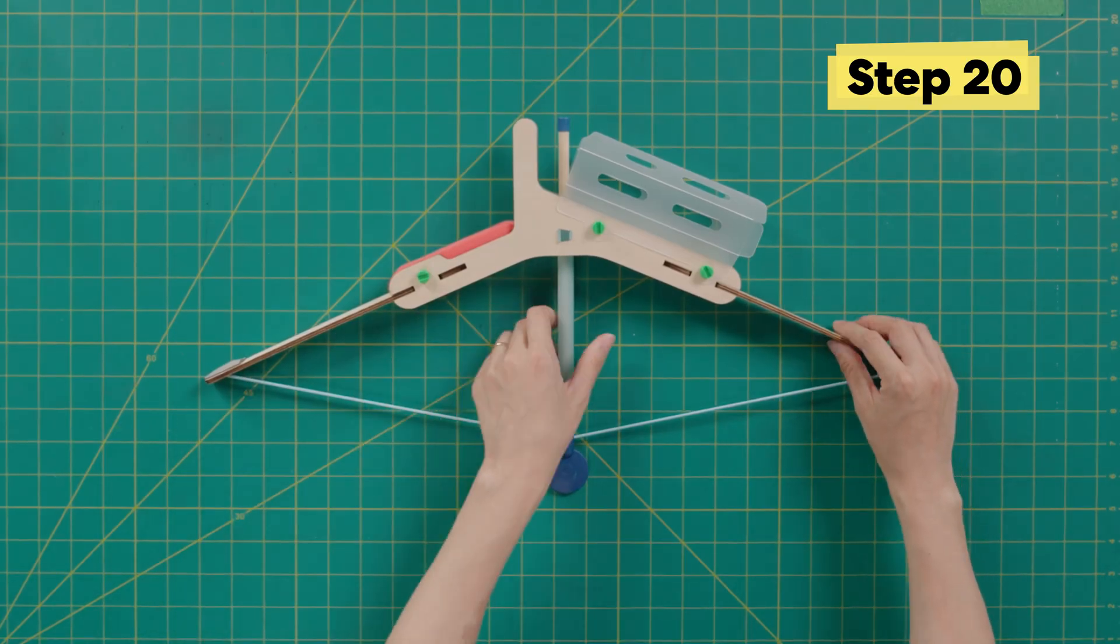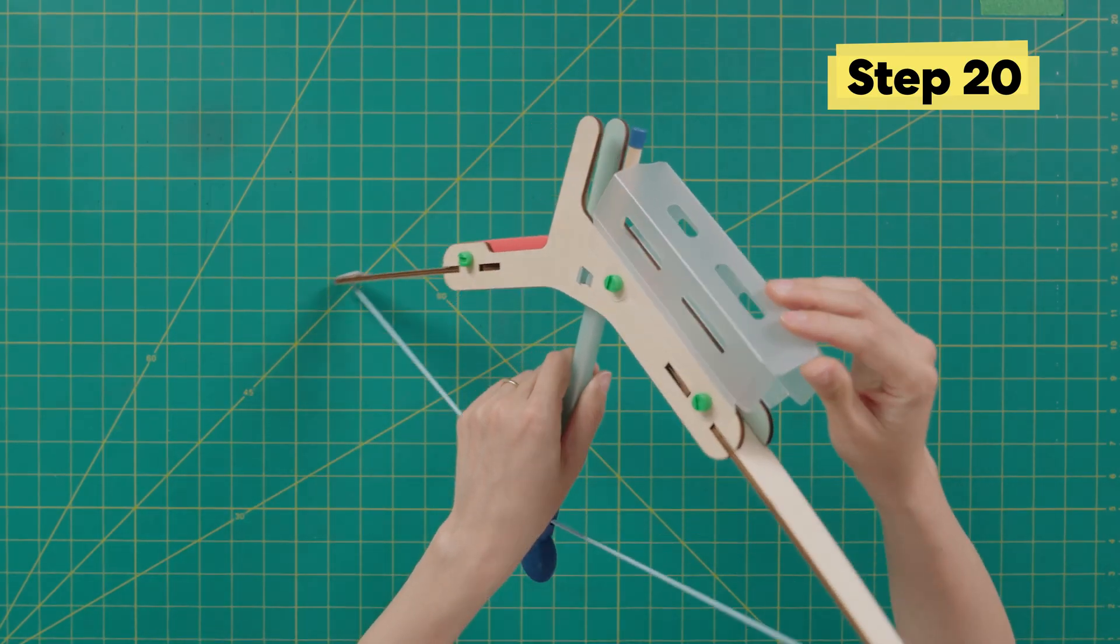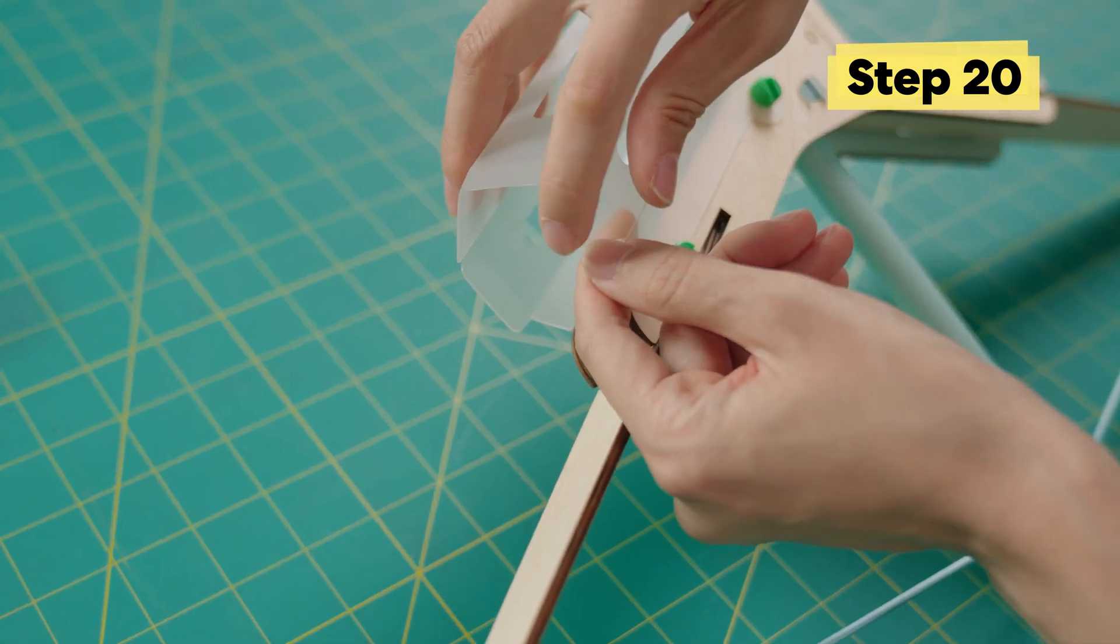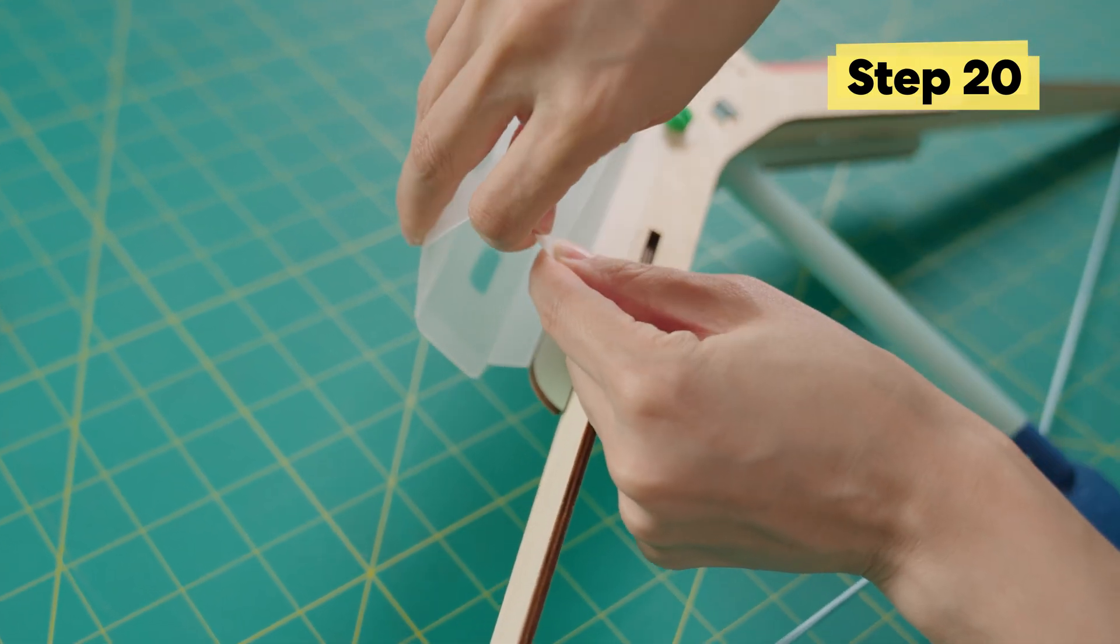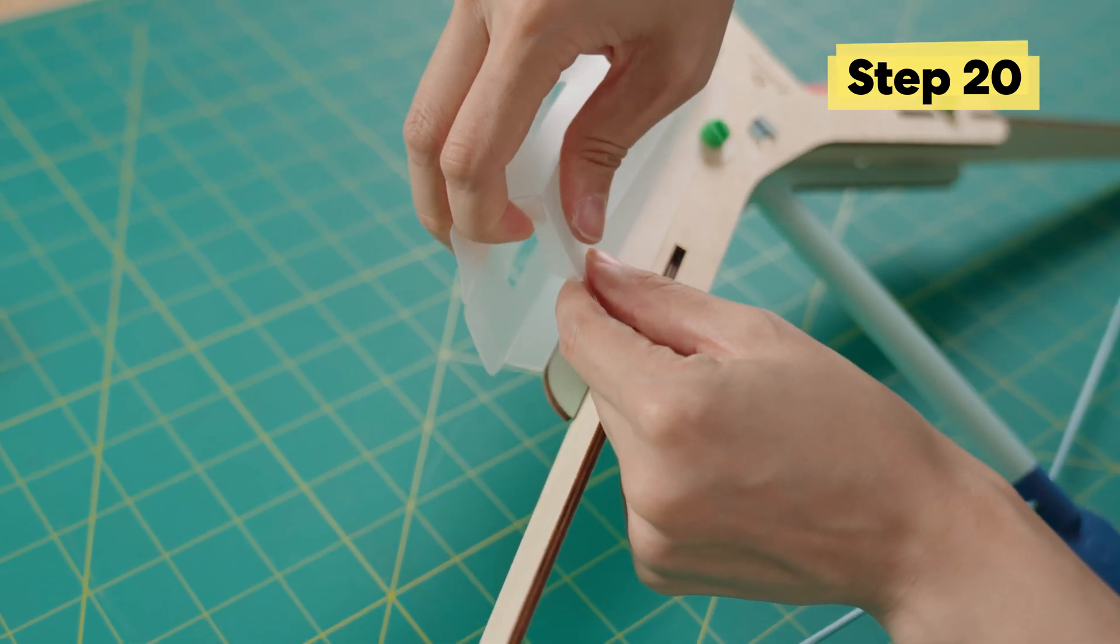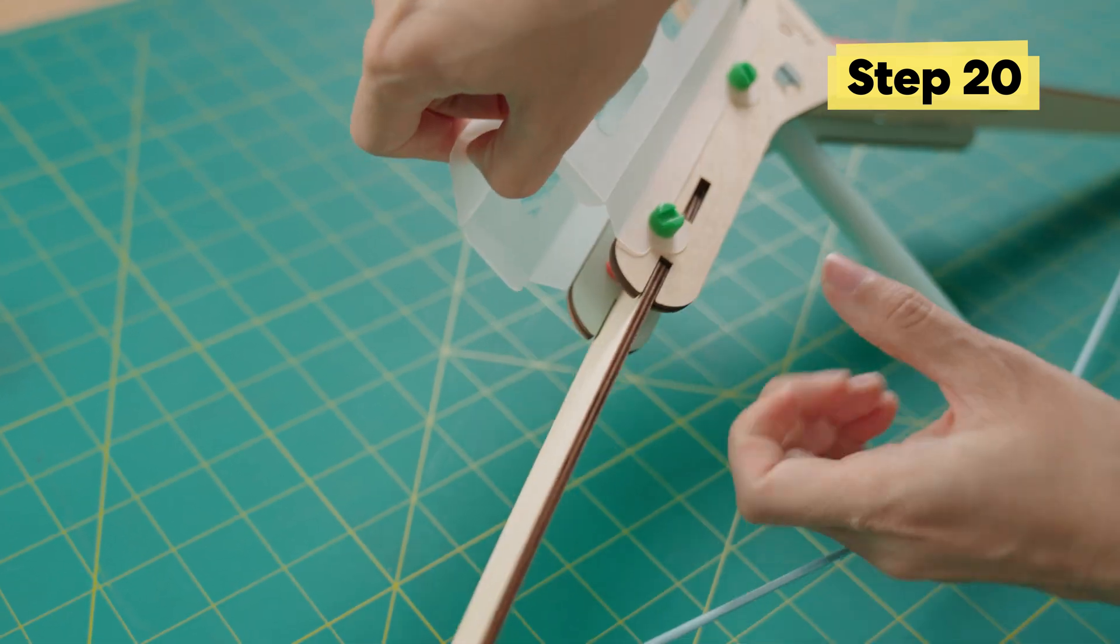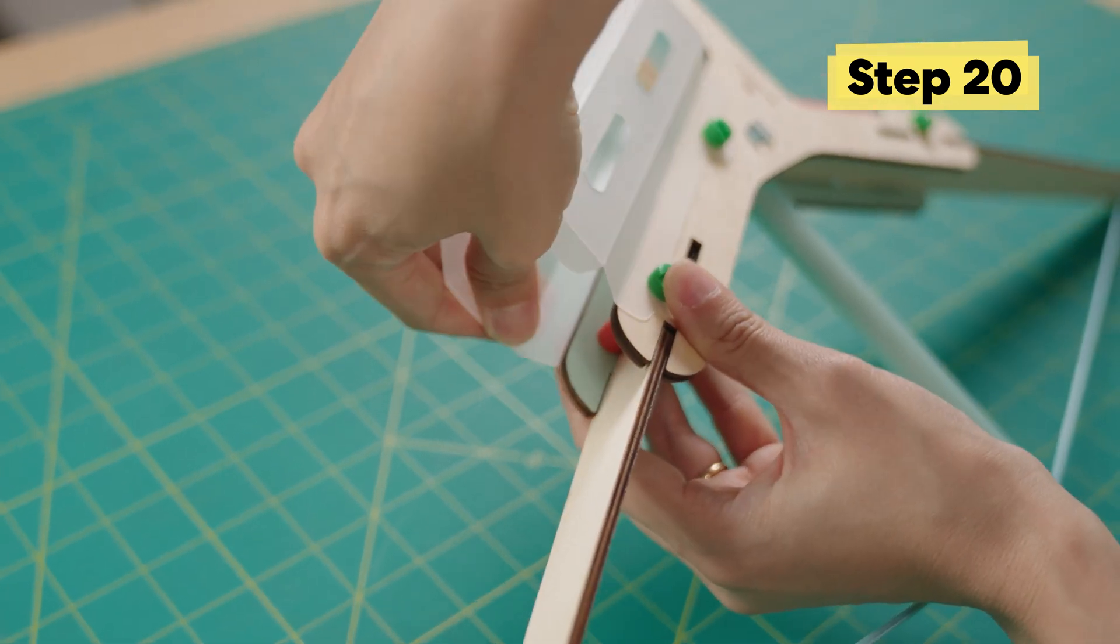We're almost done. Now we're going to shape the ball holder. Take these tabs and fold them into the center. Like so. This holds the balls in place.